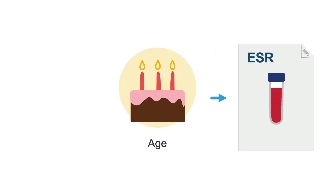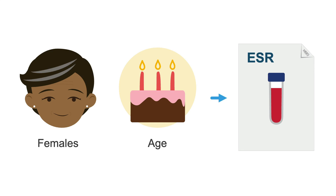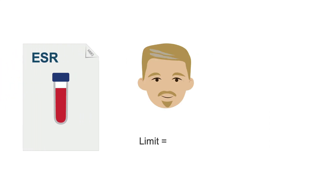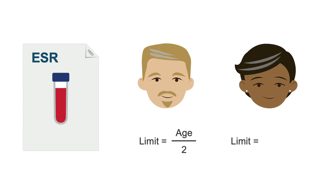ESR also tends to increase with age, and it is higher in females compared with males, so be careful what thresholds you use to determine the normal range. A rule of thumb is that the upper limit of normal ESR for males is their age divided by 2, whereas for females it's their age plus 10 divided by 2. So don't just rely on the laboratory cutoff value.